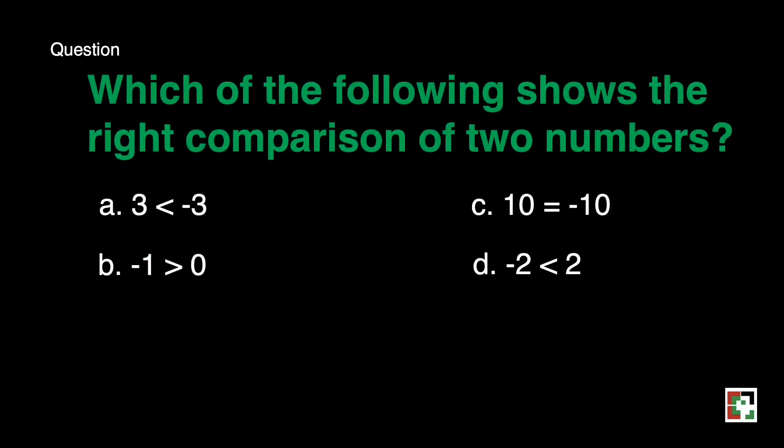Next, which of the following shows the right comparison of two numbers? A, 3 is less than negative 3. B, negative 1 is greater than 0. C, 10 is equal to negative 10. D, negative 2 is less than 2. Our answer is D, negative 2 is always less than 2.